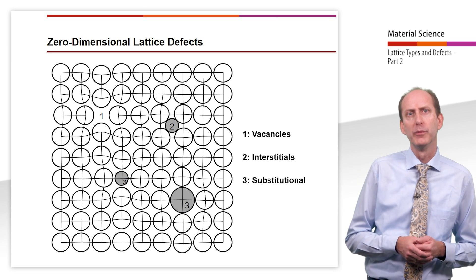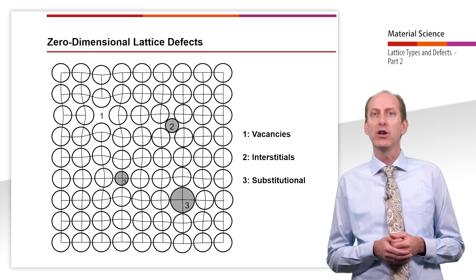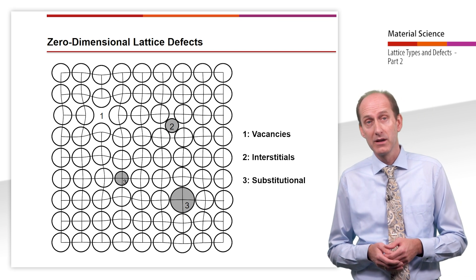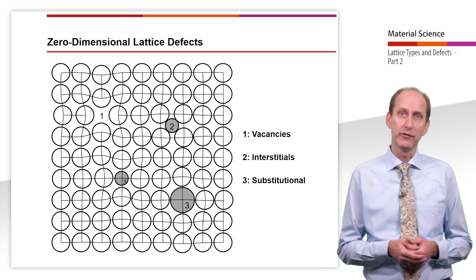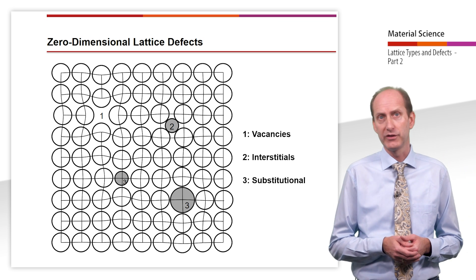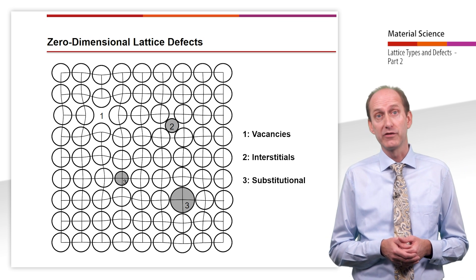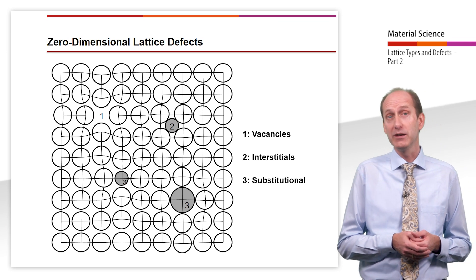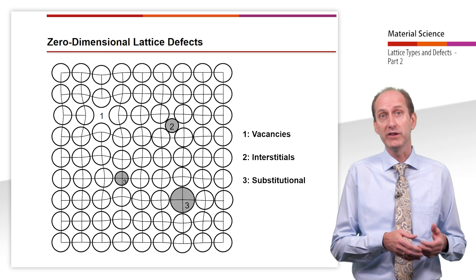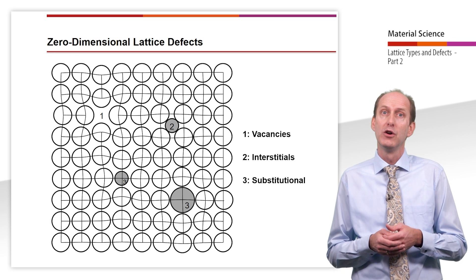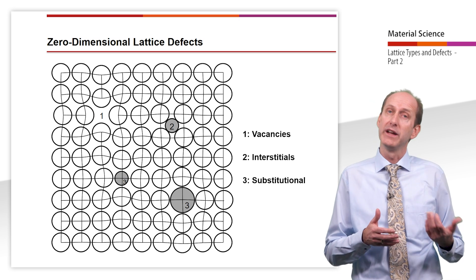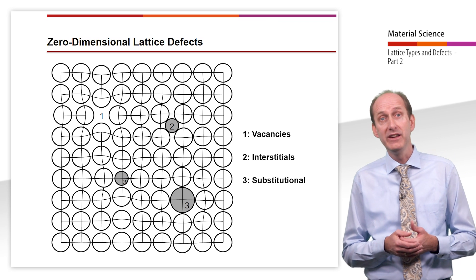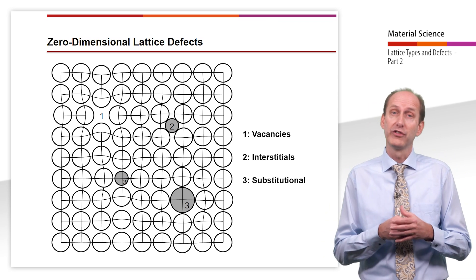Interstitial defects are formed when atoms are not located at the lattice points, but in between them. A Frenkel defect, named after the Russian physicist Yakov Ilyich Frenkel, occurs when an interstitial atom is created because an atom leaves its normal lattice point, which thus creates a vacancy.